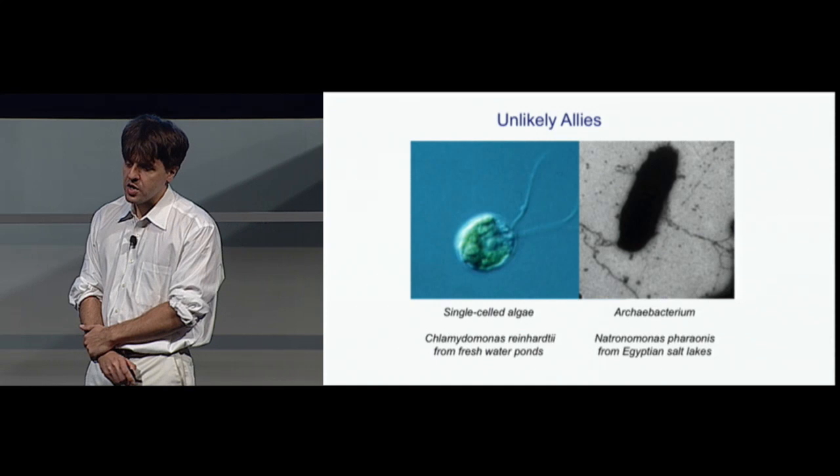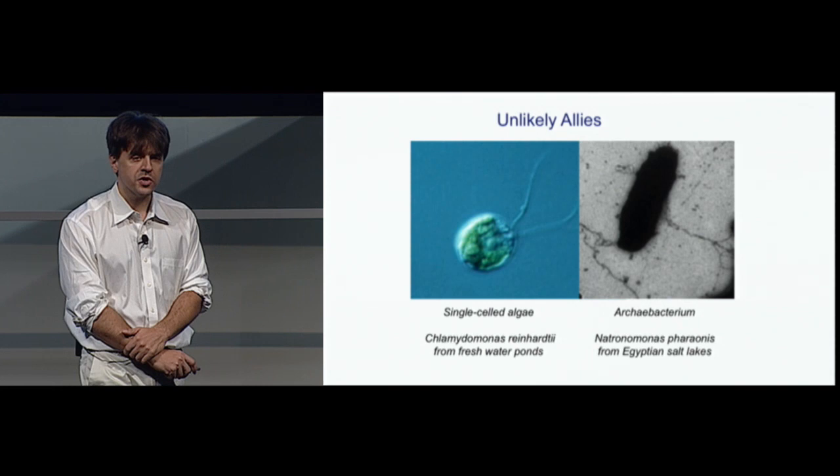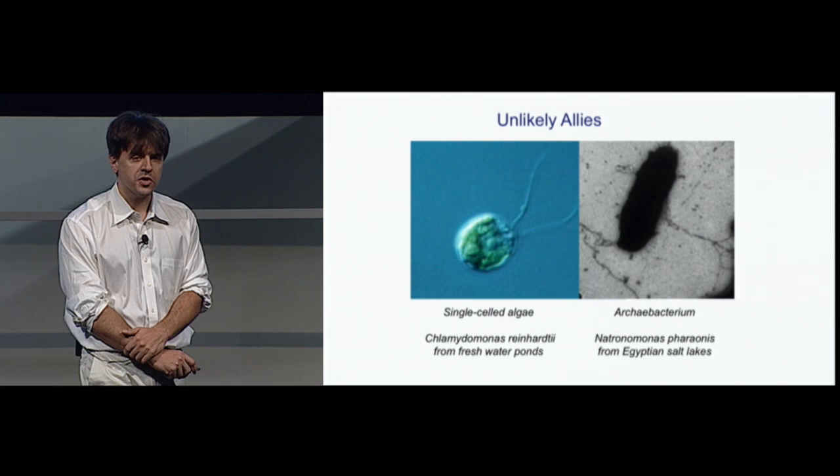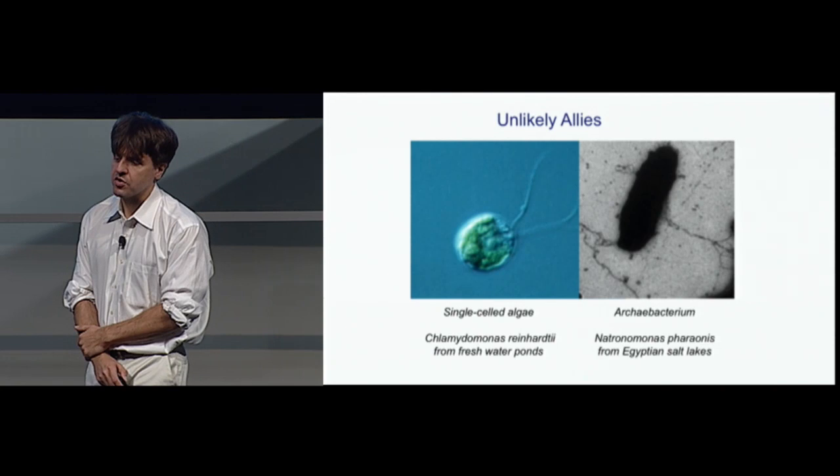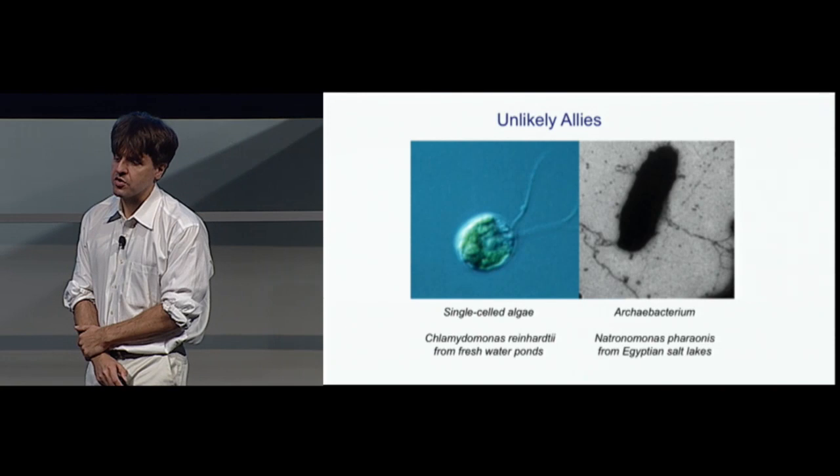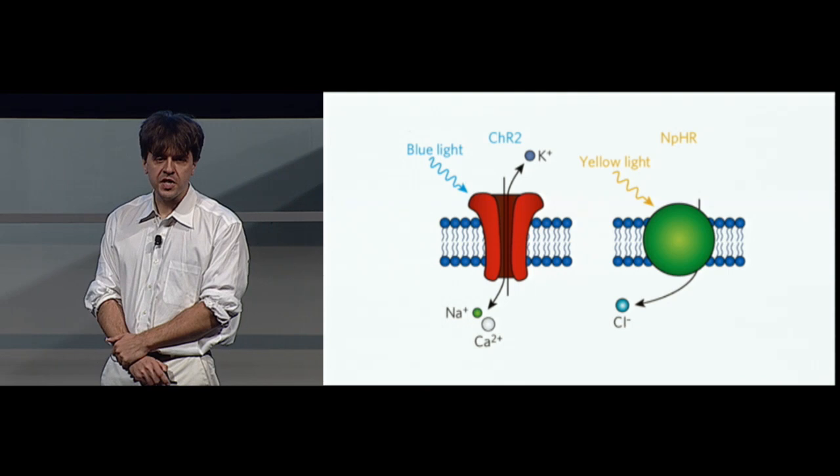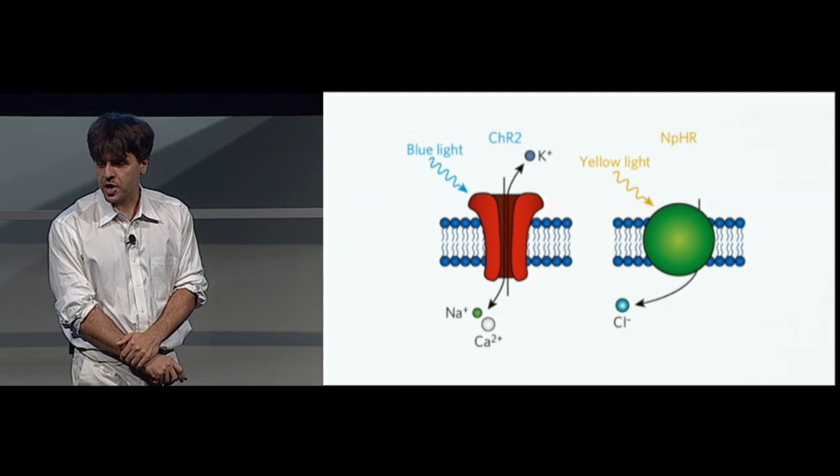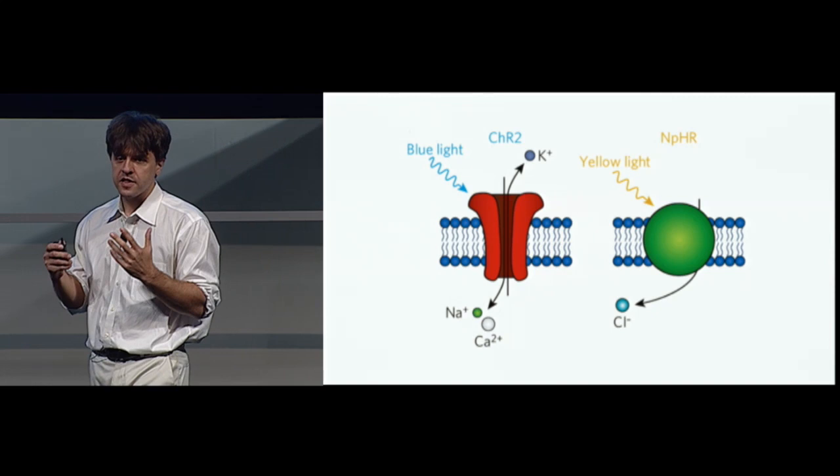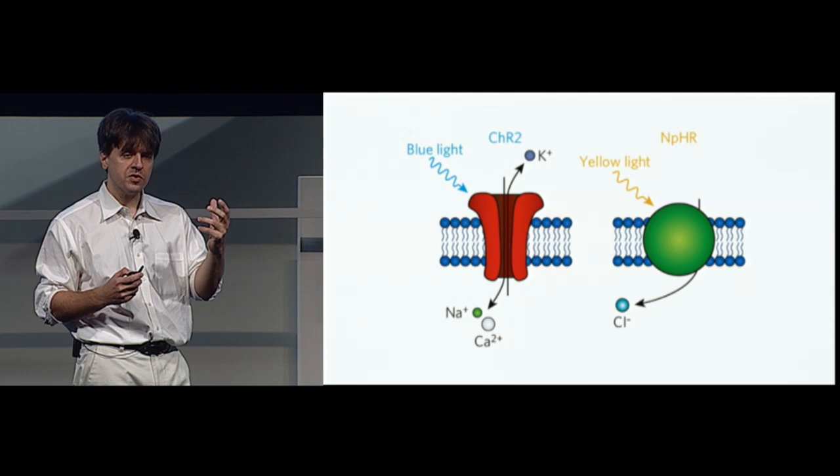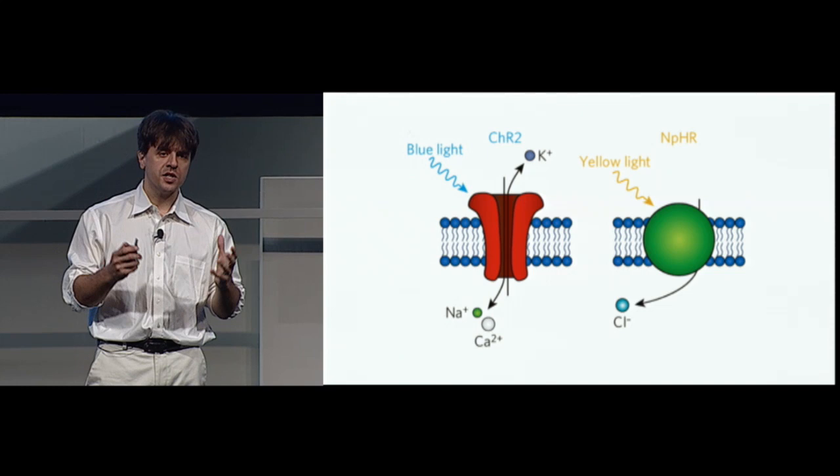Well, both of these organisms, the one on the left, the single-celled green algae called Chlamydomonas reinhardii, and the one on the right, an ancient form of bacteria, archibacterium, called Neutronomonas ferionis, these both make light-activated regulators of electrical current, single proteins that receive photons and move ions across cell membranes. They, of course, do this for their own reasons, but electricity is fundamental to how the nervous system works, and so we can take these proteins and others like them. And now you're looking at the proteins themselves. The one on the left is called a channelrhodopsin. The one on the right is called a halorhodopsin.